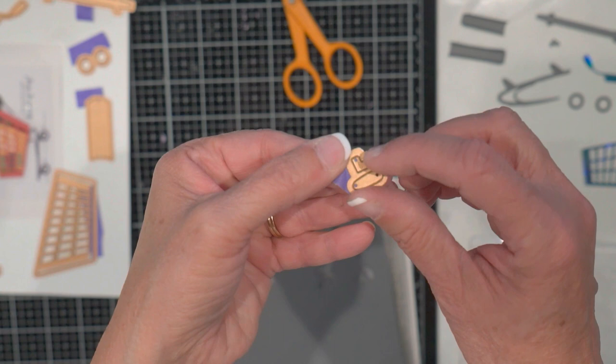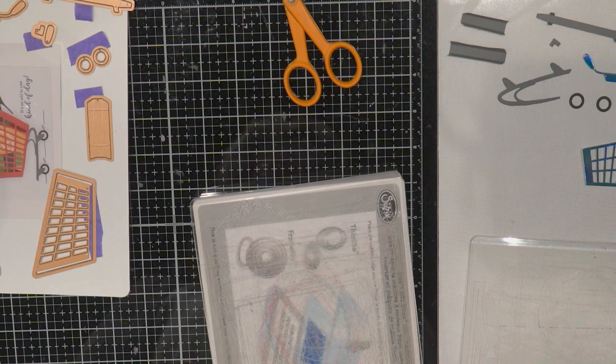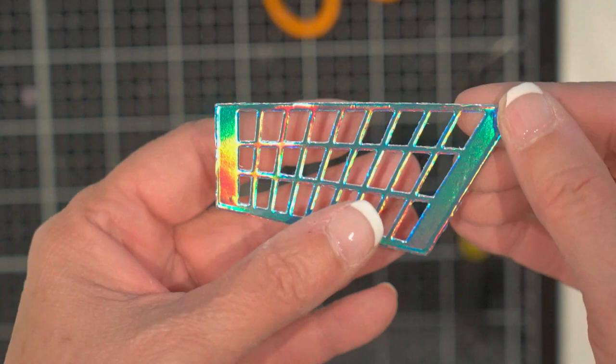I decided to cut the handle and the little cart bumper out of gray, and you need to cut two of those also. So I used black and gray and my shiny piece. I've got all my pieces cut out here. Now let's start to assemble it. I'm going to use liquid glue. I think that's going to work for this.